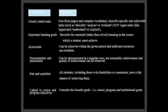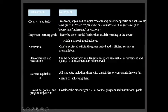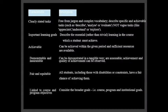Objectives must be achievable — able to be achieved within a given period and with sufficient resources. They must be demonstrable and measurable — demonstrated in a tangible and accessible way, where the quality of achievement can be observed. Objectives must also be fair and equitable, giving all students — including those with disabilities — a fair chance of achieving them. Finally, they should be linked to broader course, program, and institutional goals.